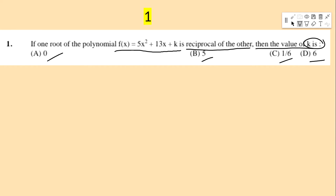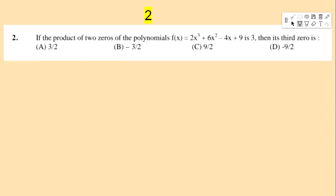Next question: if the product of two zeros of the polynomial f(x) = 2x³ + 6x² − 4x + 9 is 3, then its third zero is — options: 3/2, −3/2, 9/2, −9/2.